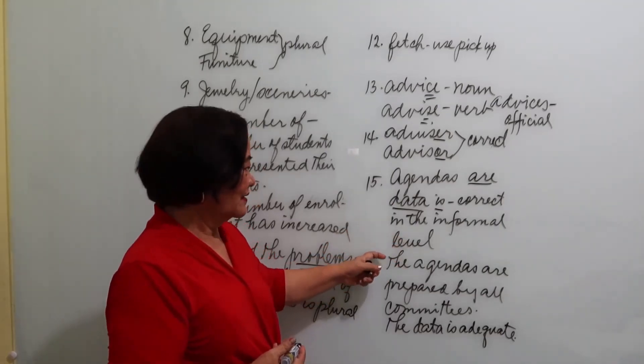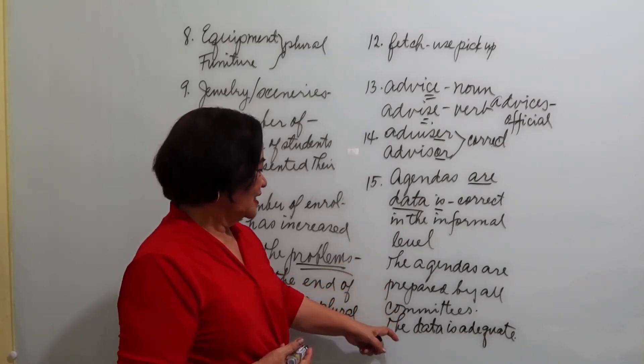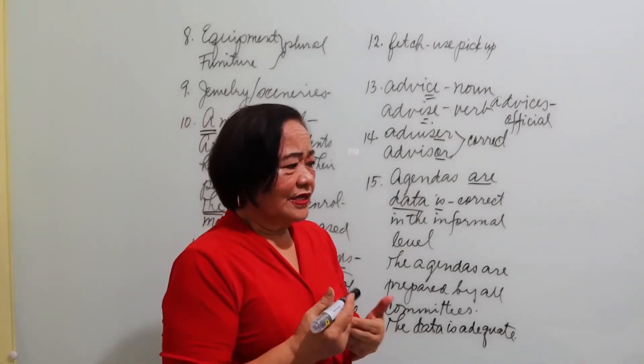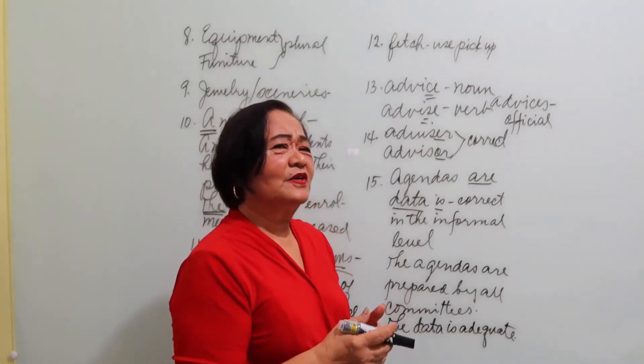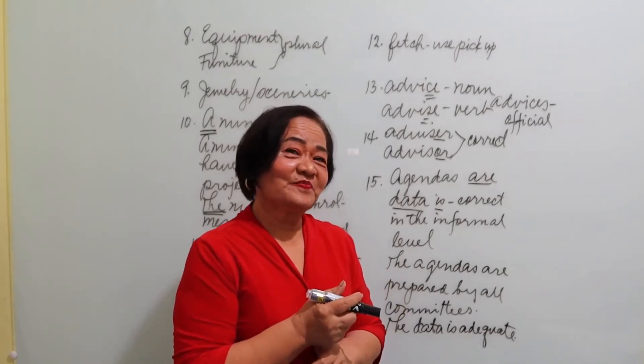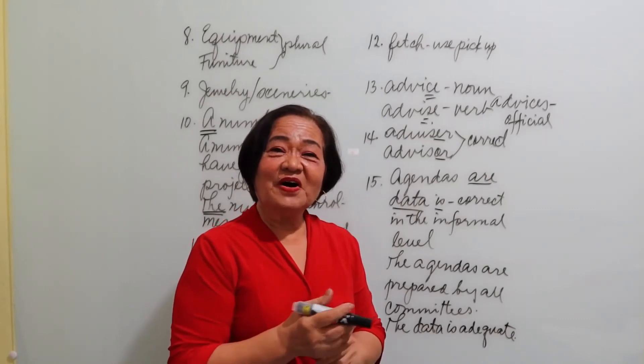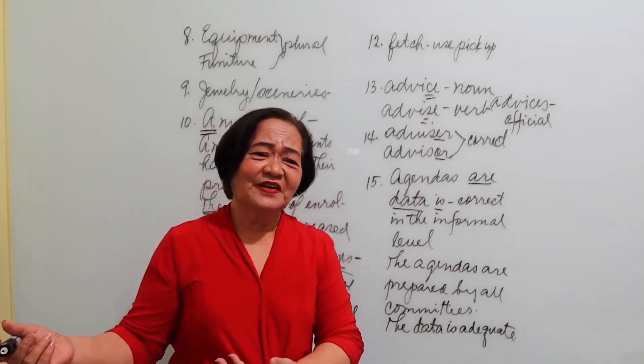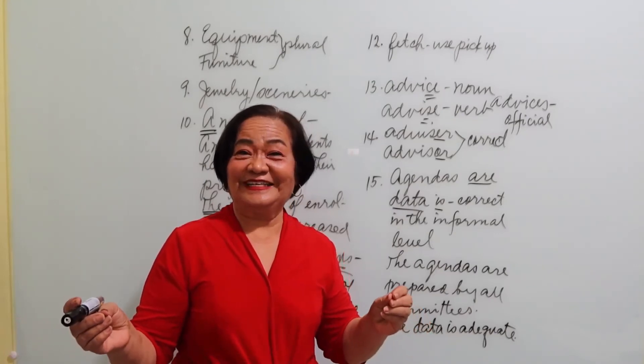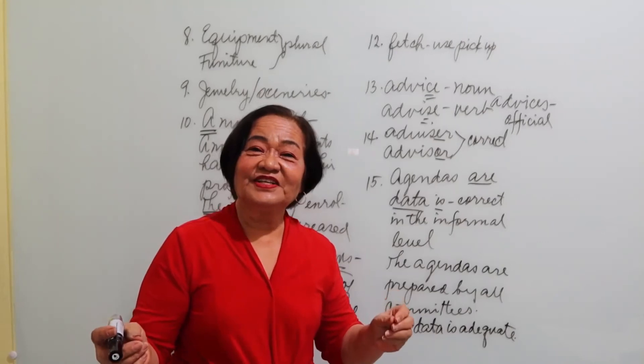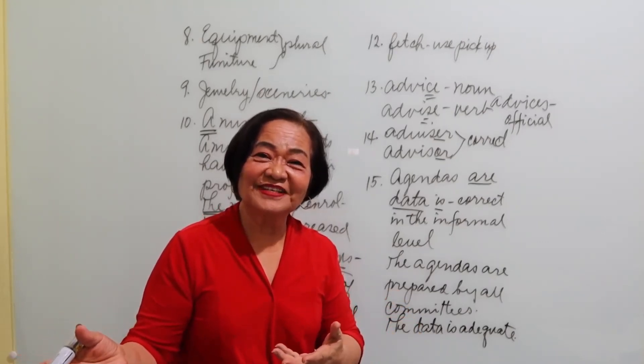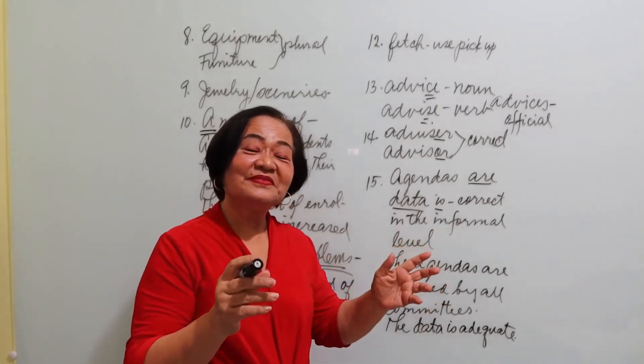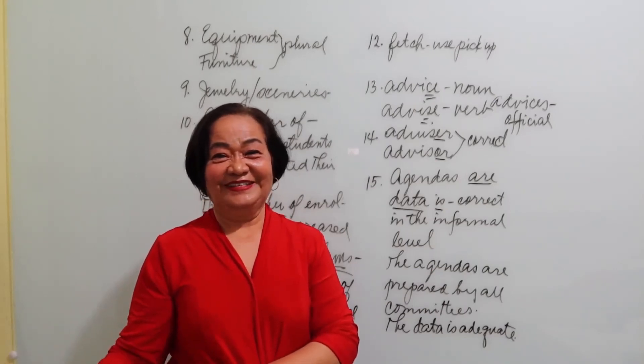They are correct in the informal level. So, the agendas are prepared by all committees. The data is adequate. Some people might remind us, what about agendum and datum? Yes, it's true, they are correct. But, modern English has relegated it now to something which they consider obsolete. Meaning, they are just like museum pieces. And they rhyme rightly with agendum, datum. They belong to the museum now. Are you surprised?